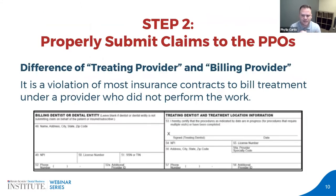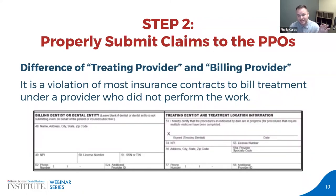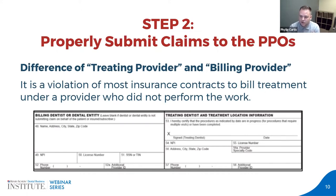Next, let's move on to step number two: properly submitting claims to PPOs. This is a commonly misunderstood issue. It is a violation of most insurance contracts to bill treatment under a provider who did not perform the work. On most claim forms there's a delineation between the billing dentist or dental entity on the left — the corporation's name, address, license, and tax ID number — and the treating dentist on the right — whoever actually rendered the treatment.